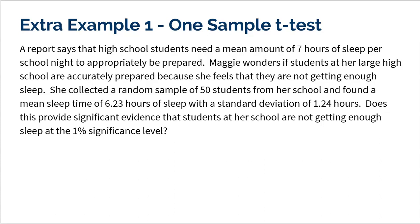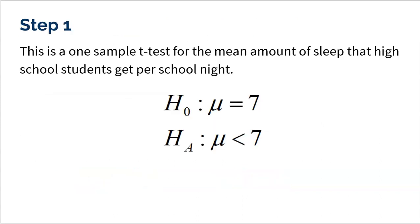Does this provide significant evidence that students at her school are not getting enough sleep at the 1% level? So what we're given here is a problem where we are given the mean. We are directly given the mean of our sample is 6.23 hours. We are given the standard deviation of our sample is 1.24 hours. And they do ask us to use a significance level of 1%. So if we are going to prove, we have to show that my sample is one of those really significant samples in the bottom 1%. Why am I saying bottom? Because Maggie believes that the kids at her school are not getting enough sleep. So that's why I want to show that this is significantly low.